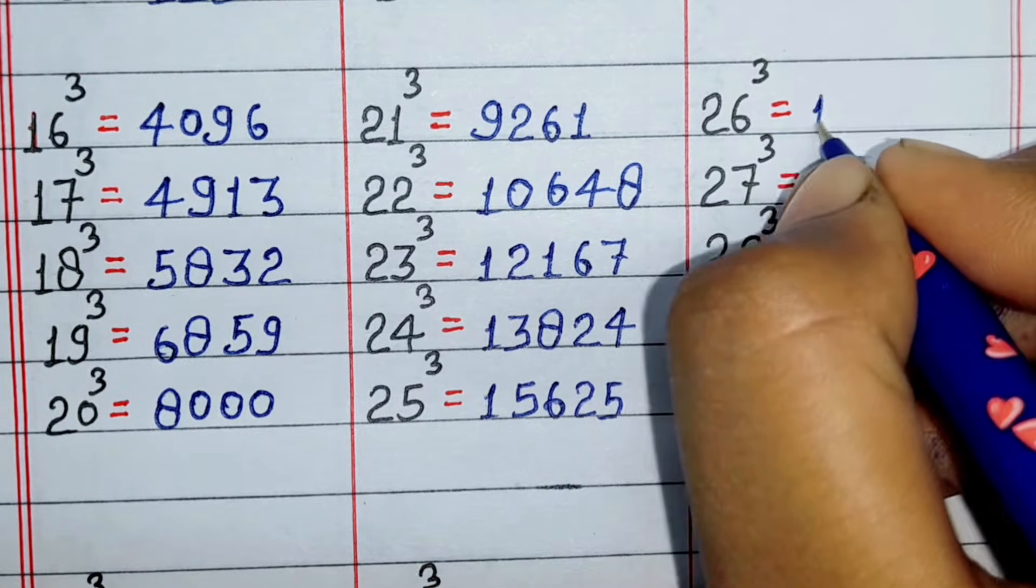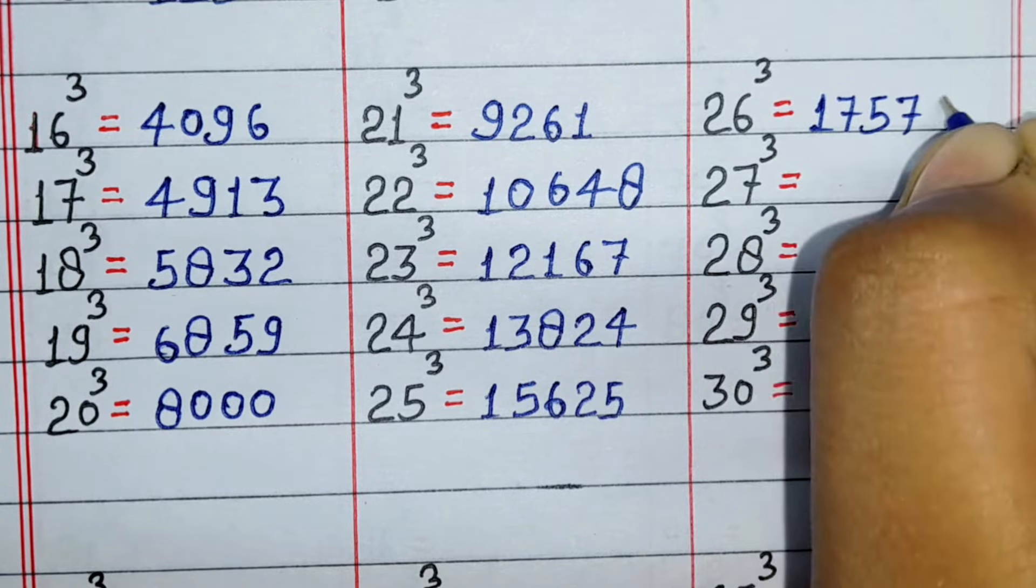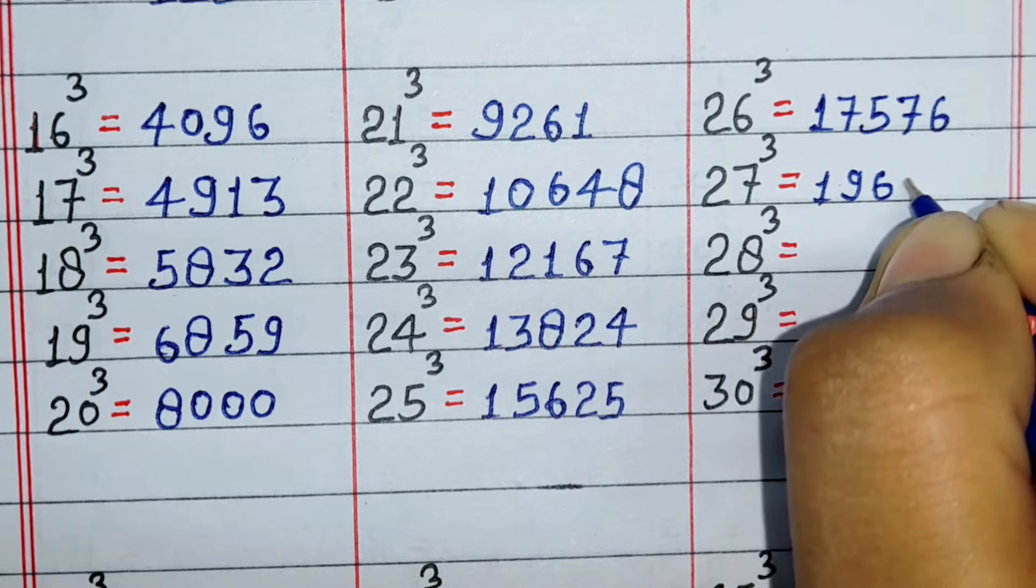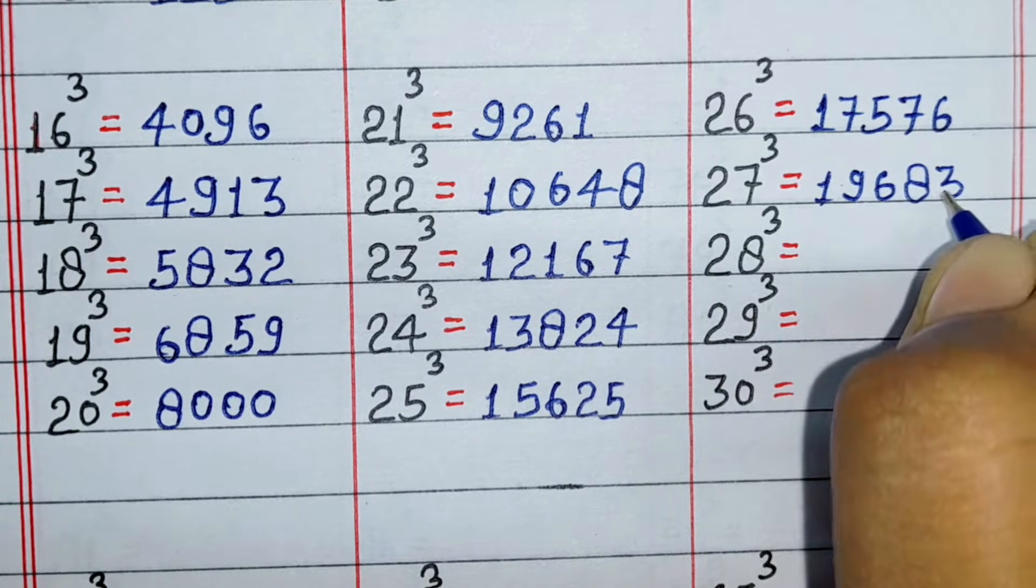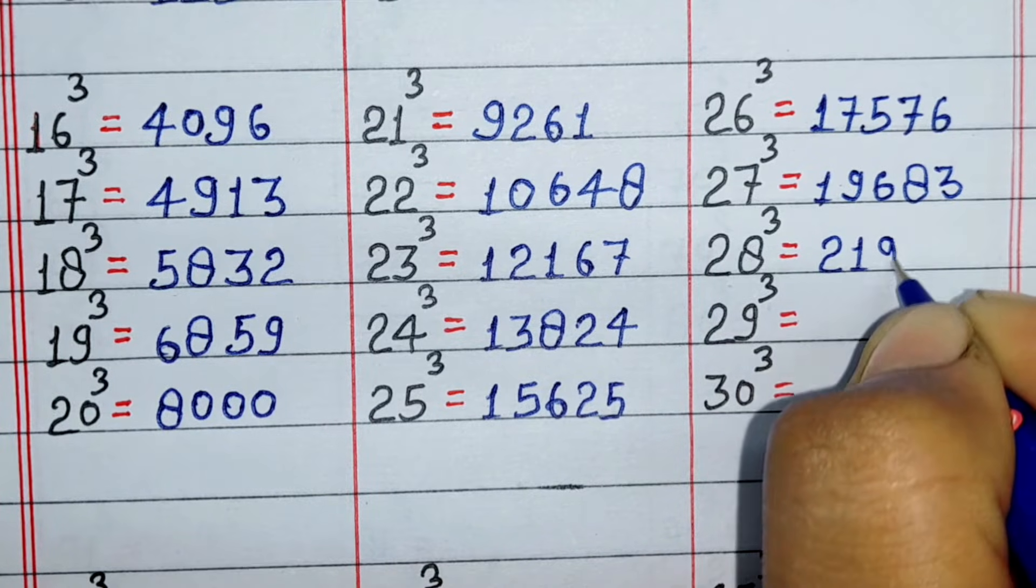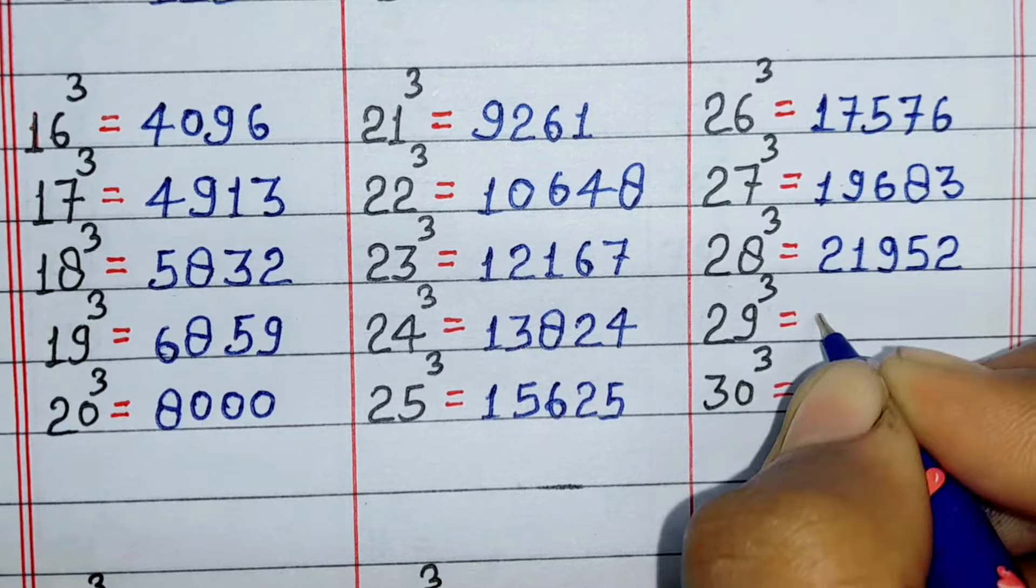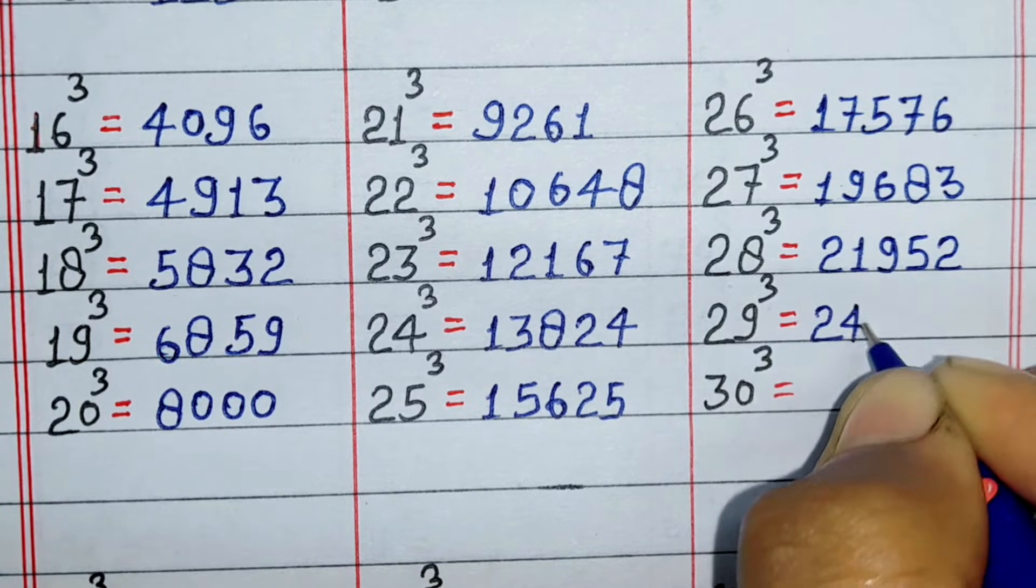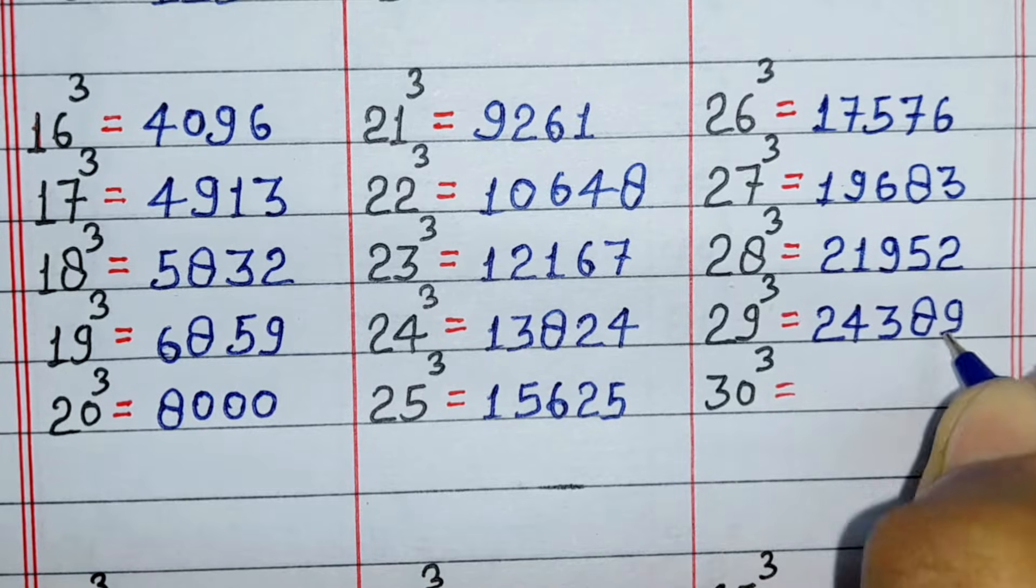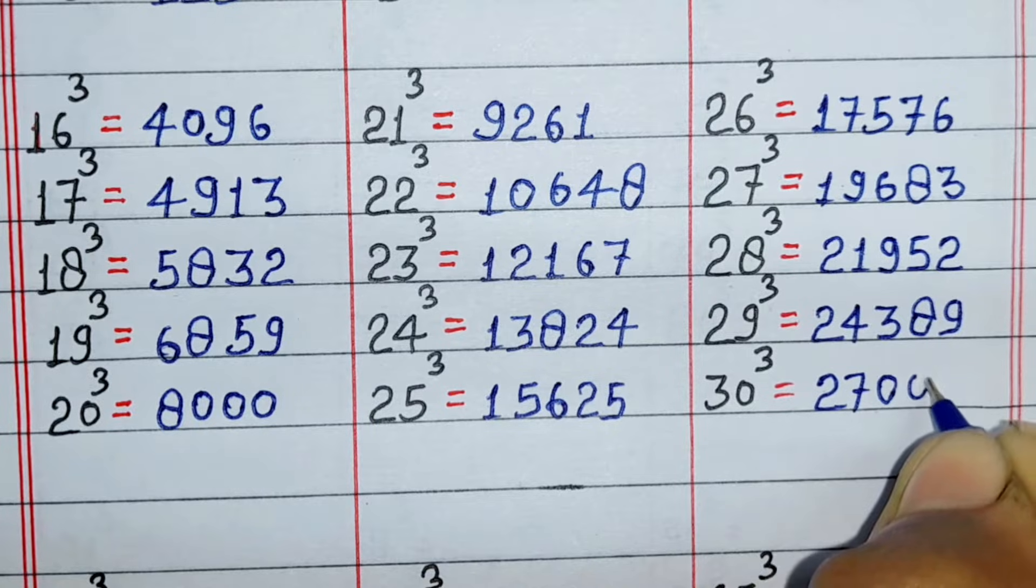Cube of 26 is 17576, cube of 27 is 19683, cube of 29 is 24389, cube of 30 is 27000.